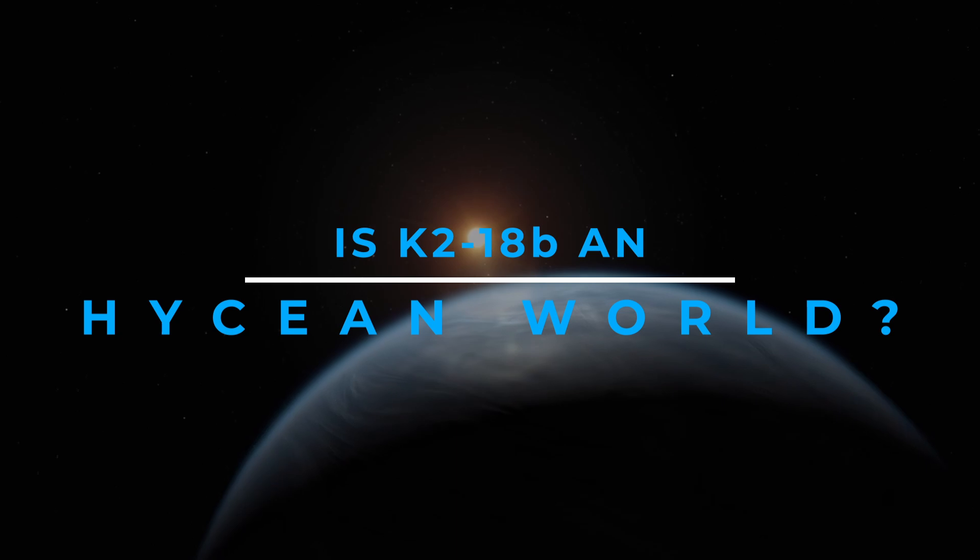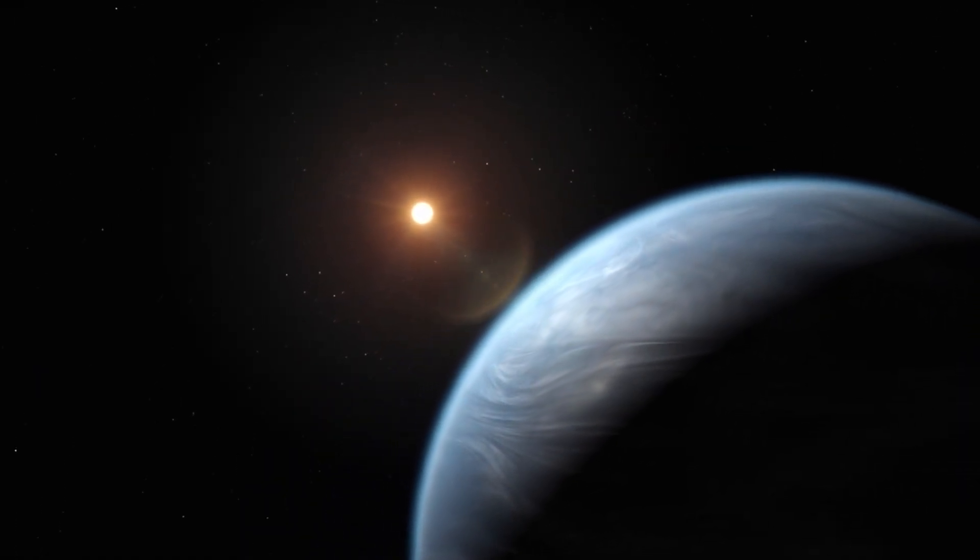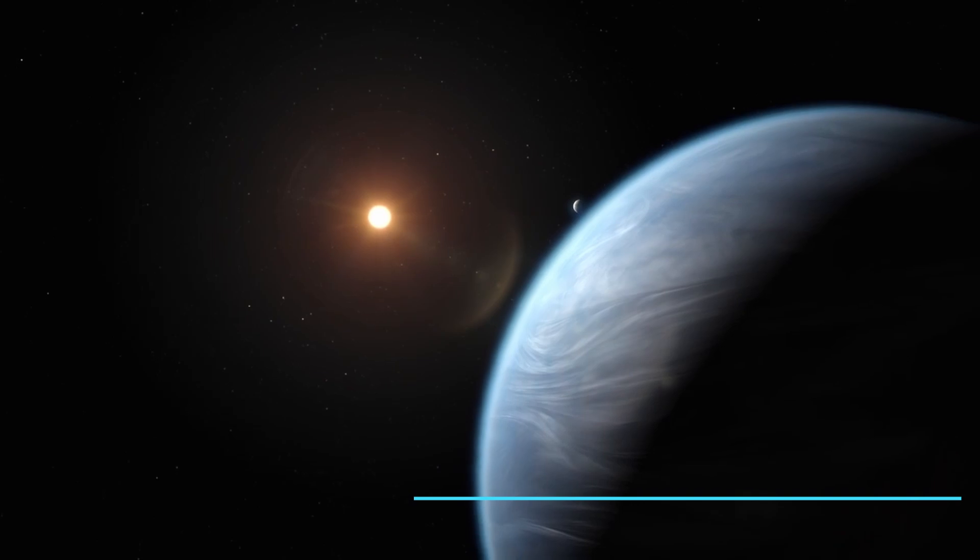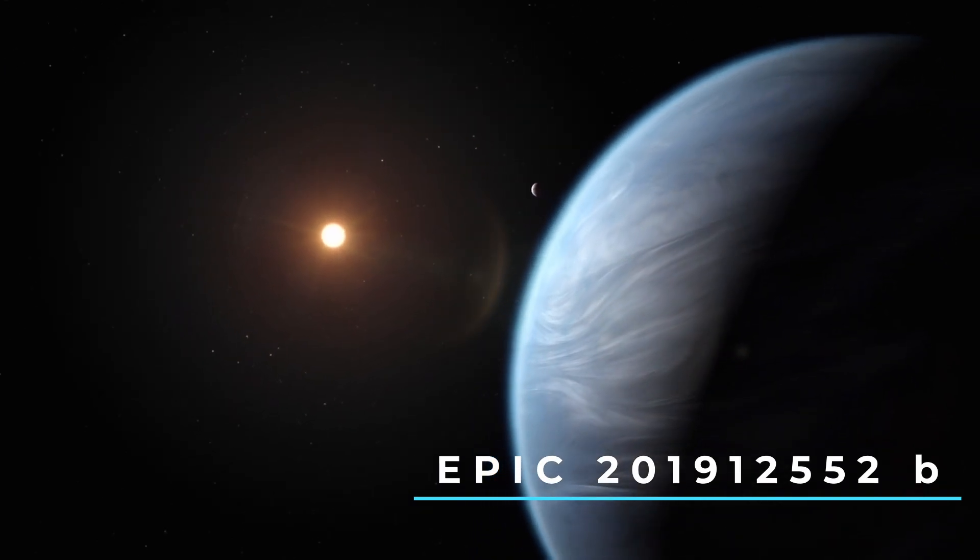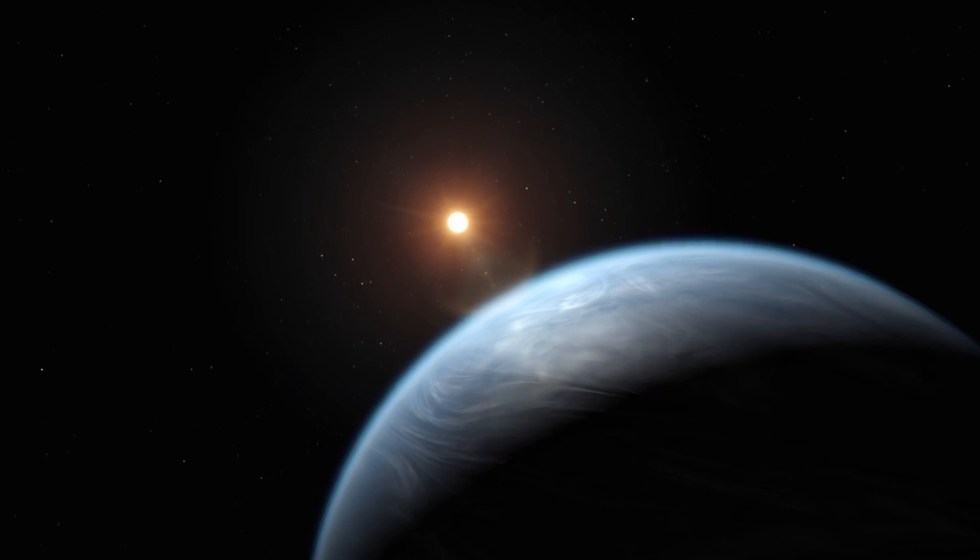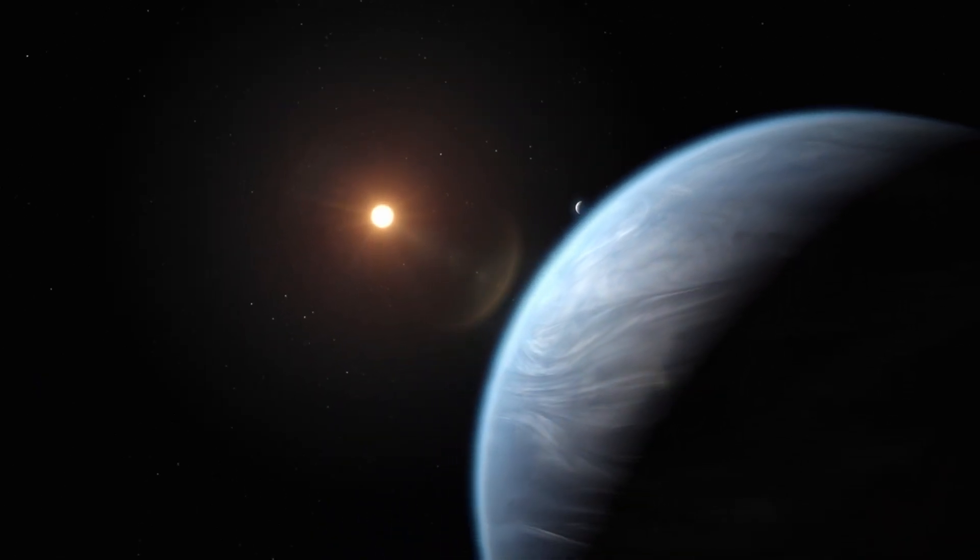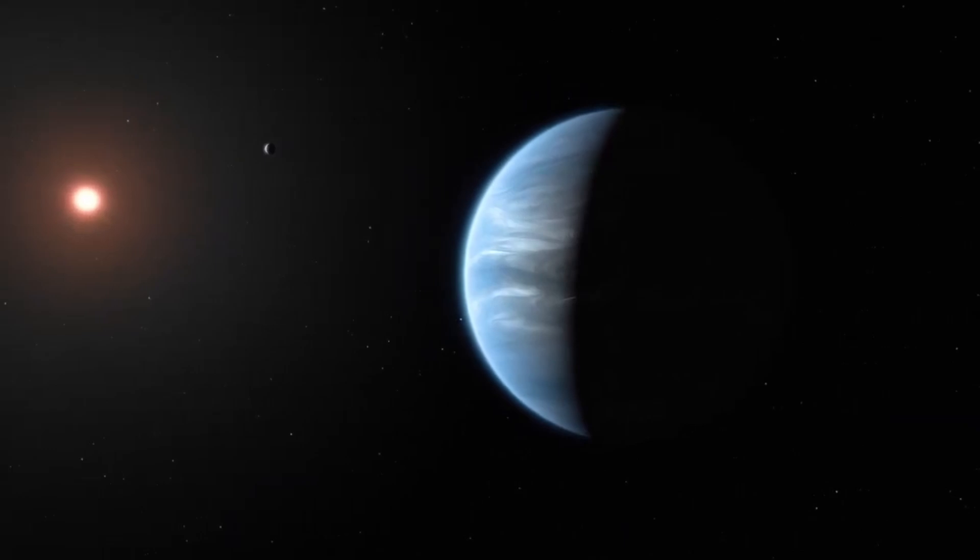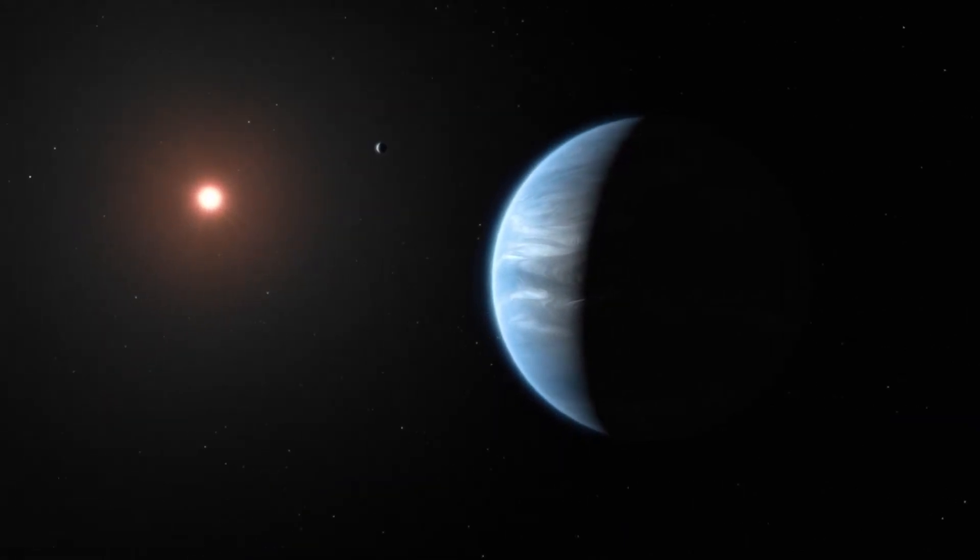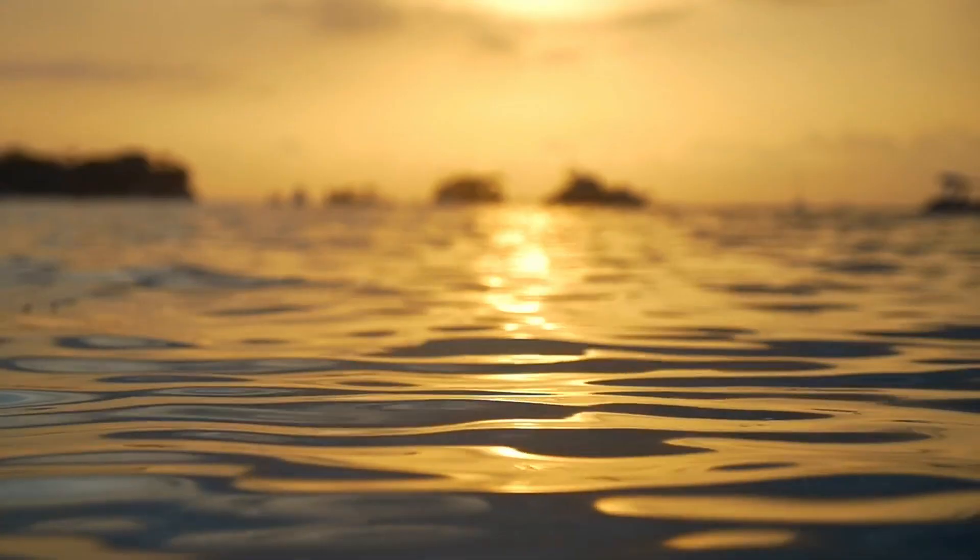Is K-218b a Hycean world? One of the planets orbiting K-218 is K-218b, also known as EPIC 201912552b. This exoplanet, initially discovered by the Kepler Space Telescope, is about 8 times the mass of Earth, earning it the classification of a mini-Neptune. It completes an orbit around its star every 33 days, placing it within the habitable zone, where conditions might allow for the existence of liquid water.